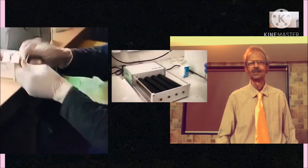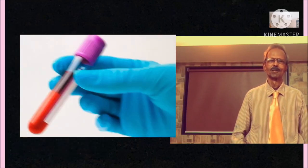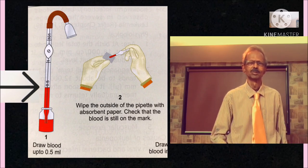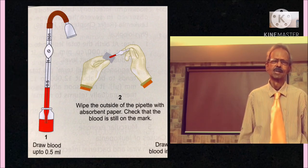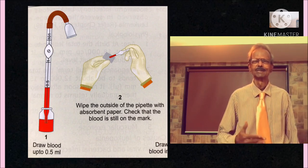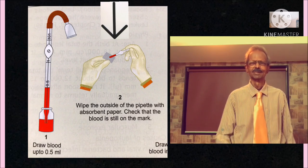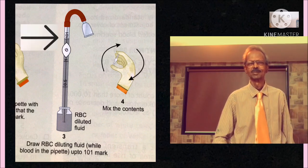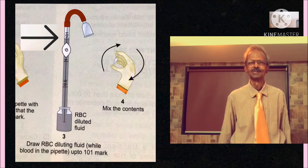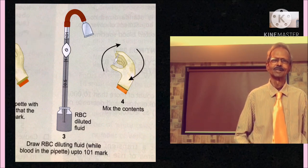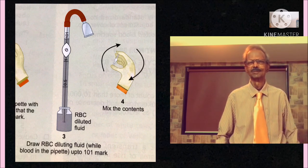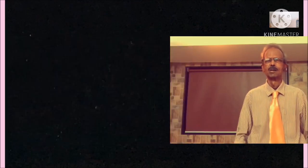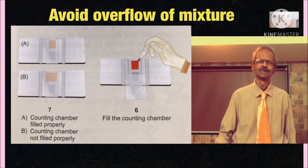Procedure: Mix anti-coagulated blood as shown on the left hand side. Then draw blood up to 0.5 mark in a red blood cell pipette. Carefully wipe the excess of blood outside the pipette by using cotton or gauze. Draw diluting fluid up to 101 mark of the pipette. Then the pipette is rotated carefully by keeping it horizontal during mixing.